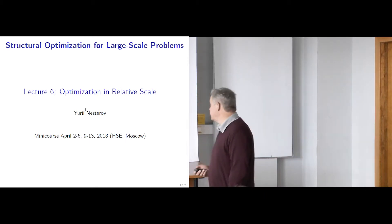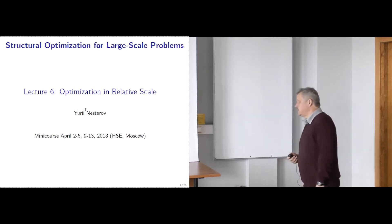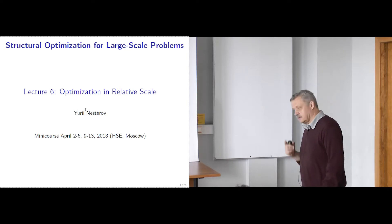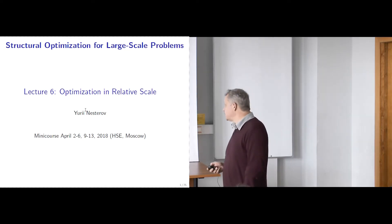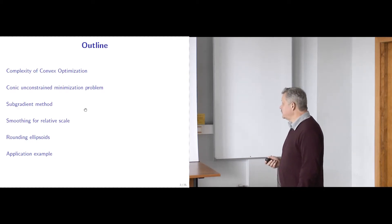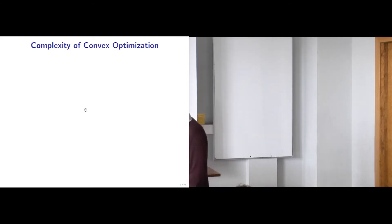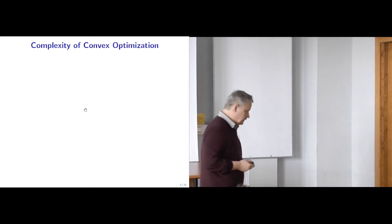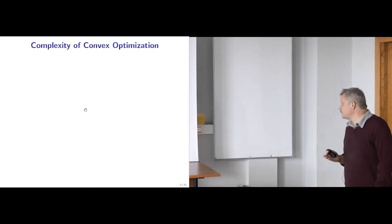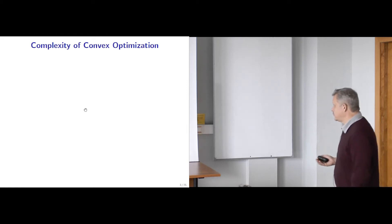Let us start our next lecture. Today we will be speaking about optimization in a relative scale. This is quite a non-standard setting in non-linear optimization. This is the program for today. First of all, let me recall what kind of complexity results we have already seen in convex optimization. We will compare them and see the strong points and the weak points.